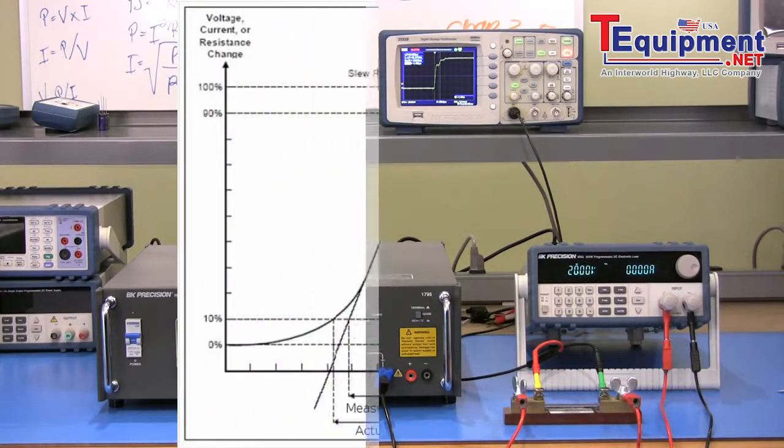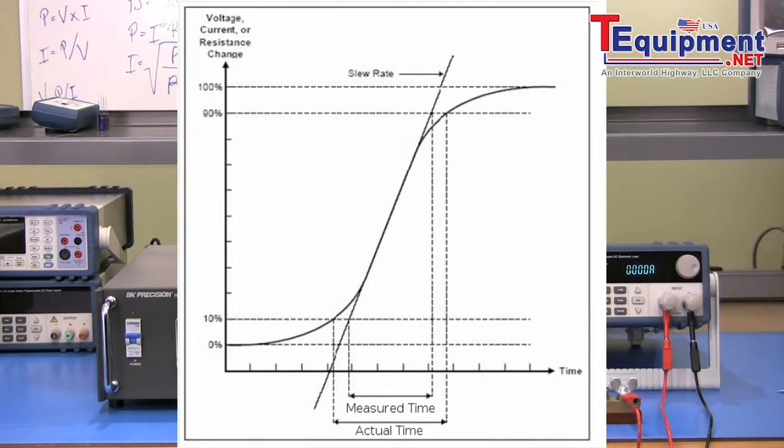The slew rate can be measured by observing the steepest slope portion as indicated by the graph. The indicated measure time will be used to calculate the slew rate.